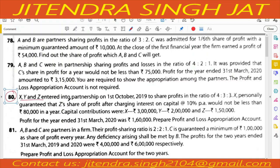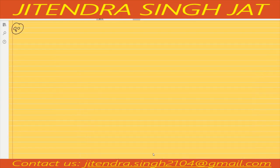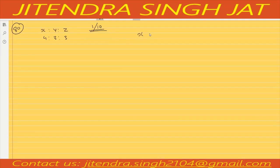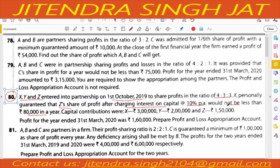Question number 80: X, Y, and Z entered into partnership on 1st October 2019 to share future profits in the ratio 4 to 3 to 3. X personally guaranteed that Z's share of profit after charging interest on capital at the rate of 10 percent per annum would not be less than 80,000 in a year.